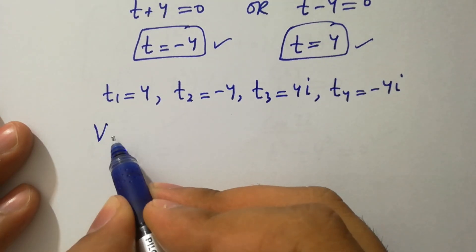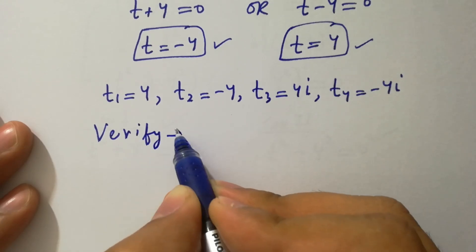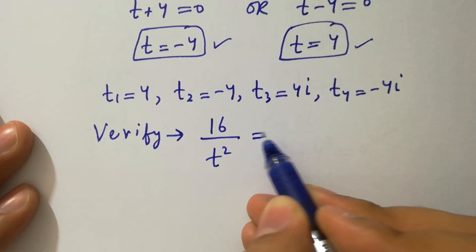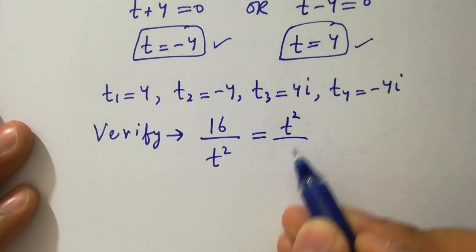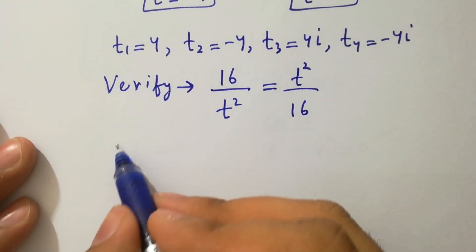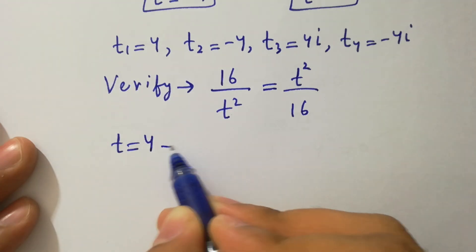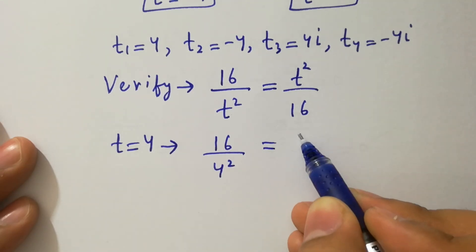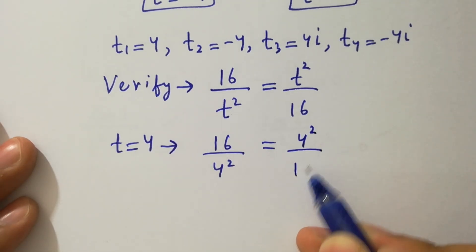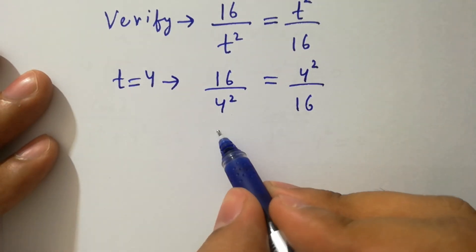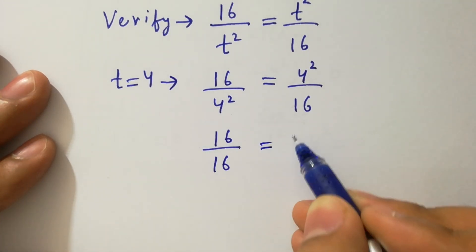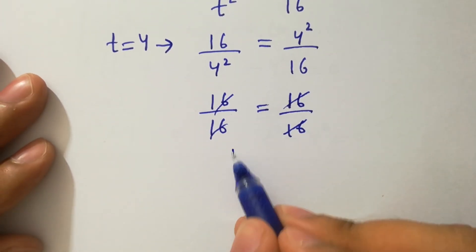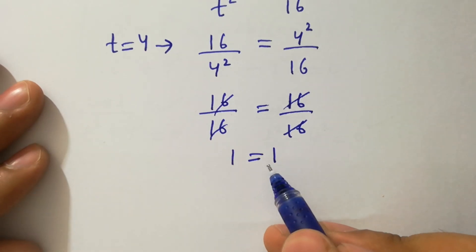In the next step, I am going to verify. The equation is 16 over t square equal to t square over 16. First, put the value t equals 4: 16 over 4 square equals 4 square over 16, which gives 16 over 16 equals 16 over 16, so 1 equals 1. Left hand side equals right hand side.